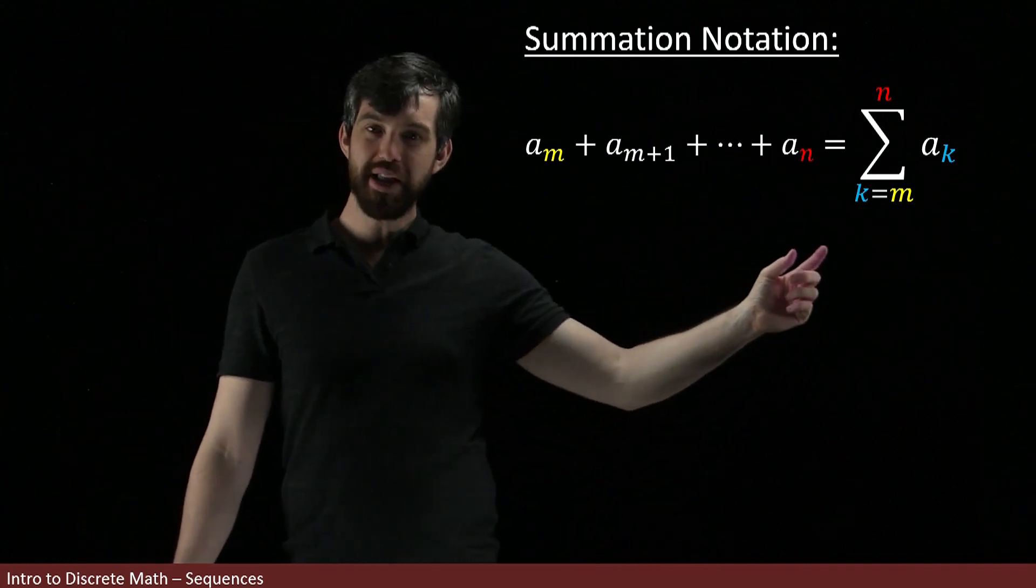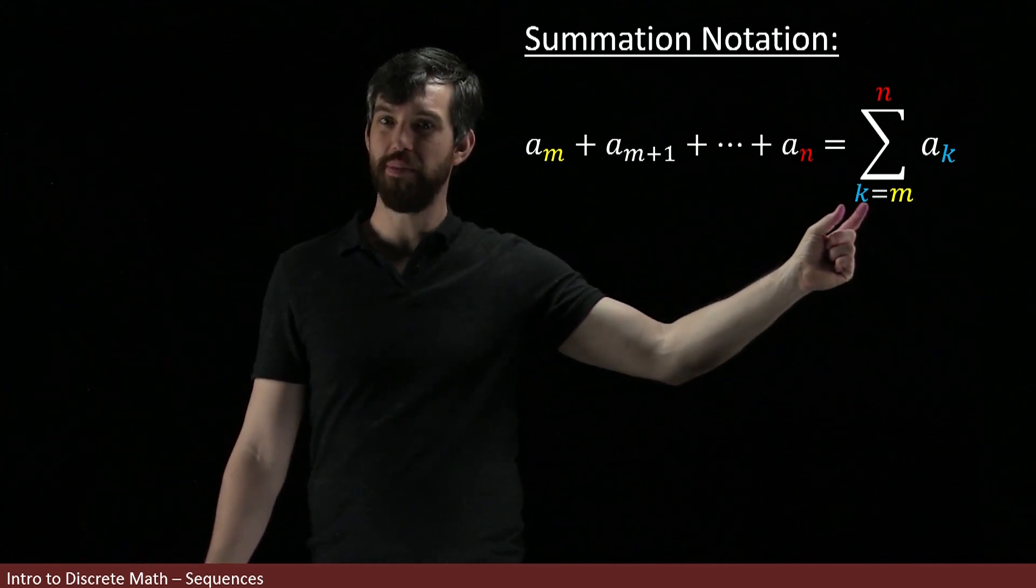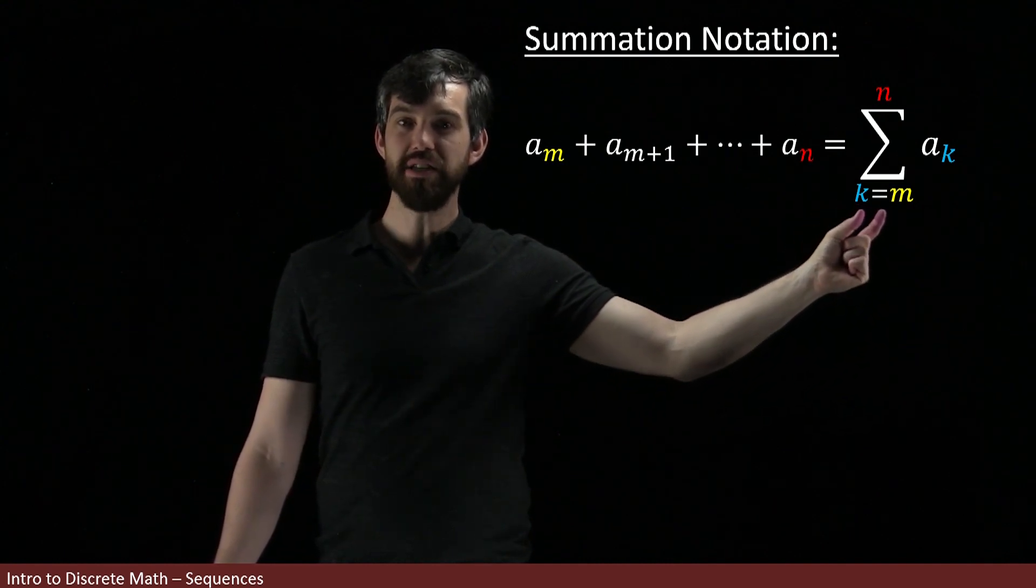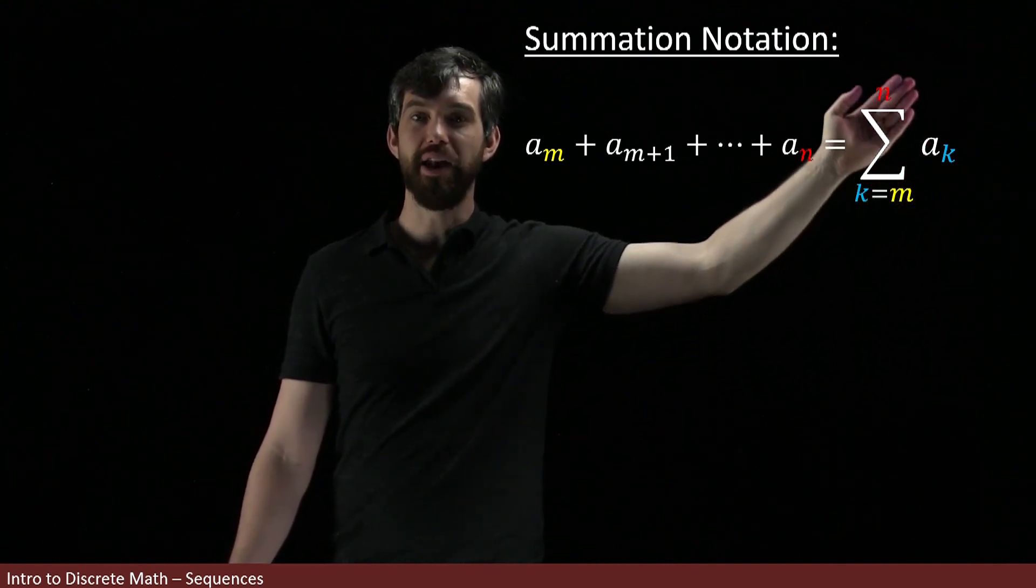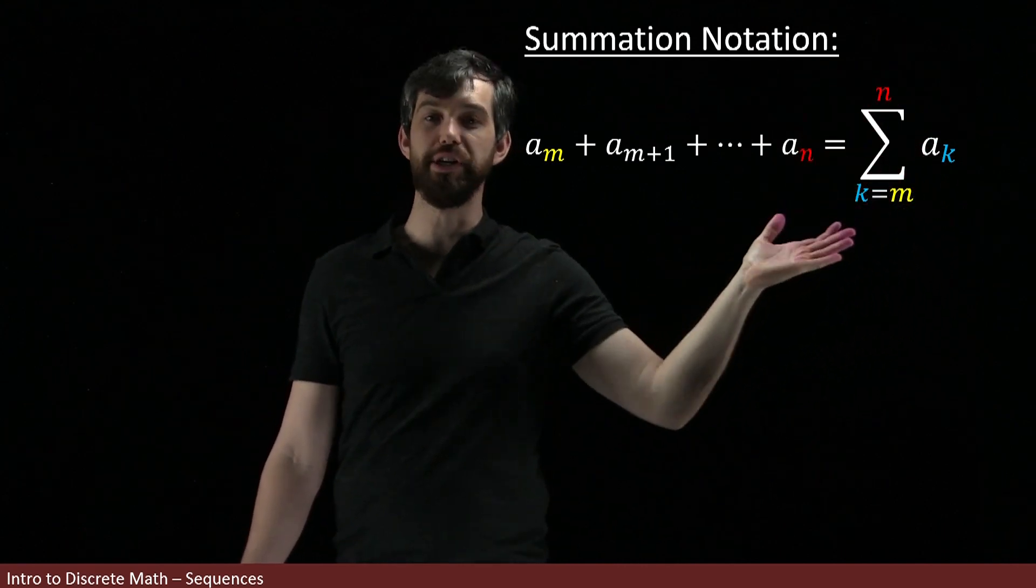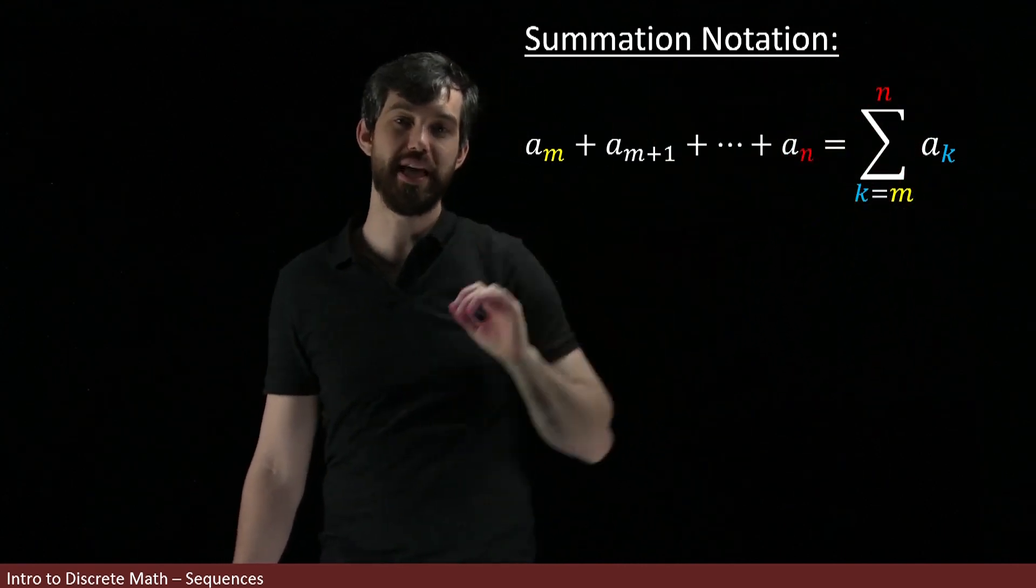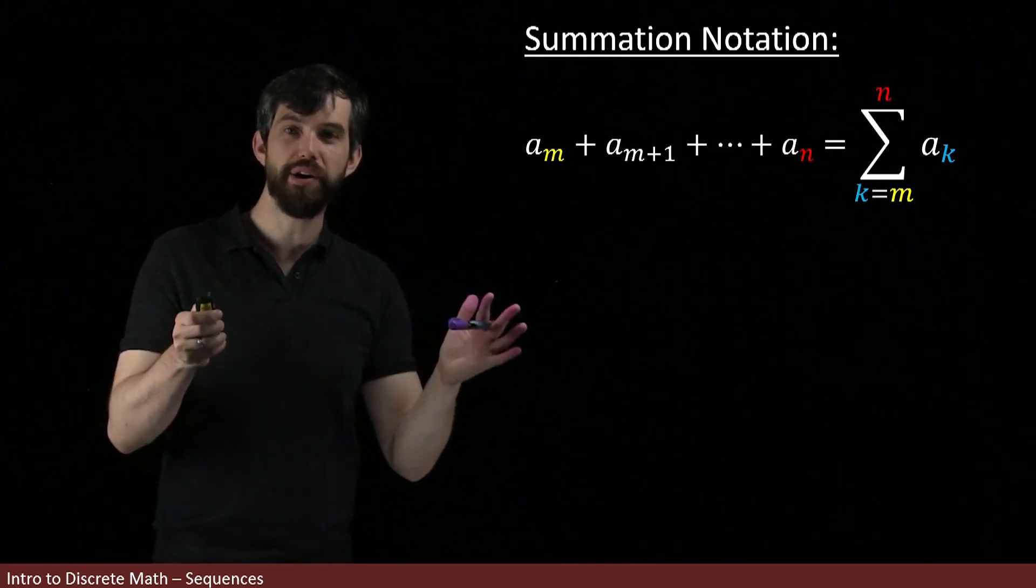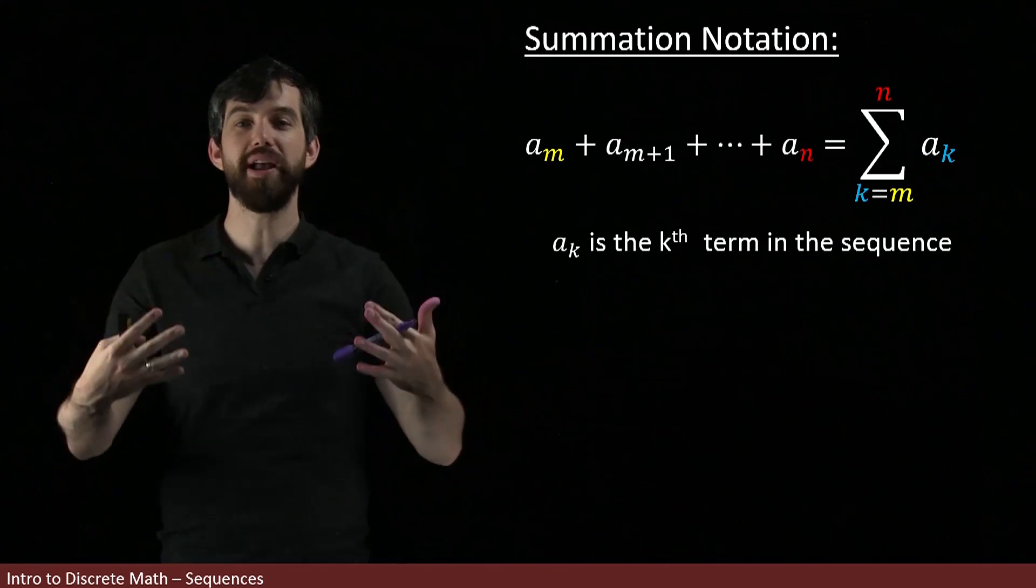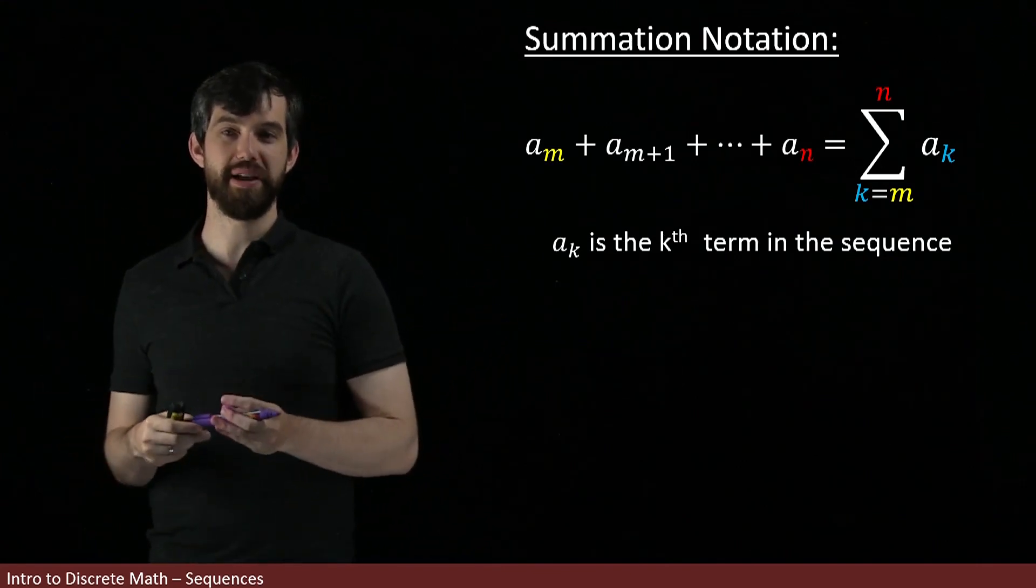And then, the way I write it is I say that my index variable, that k, the k is the one that's changing, this is thought of as the k starts at m and goes up to n, and I'm summing up all of the ak's in that region from the m up to the n. So, here, the ak is thought of as that generic kth term in my sequence.